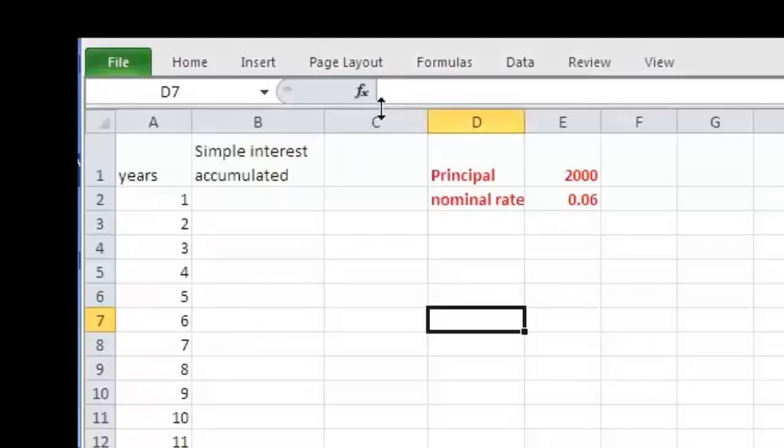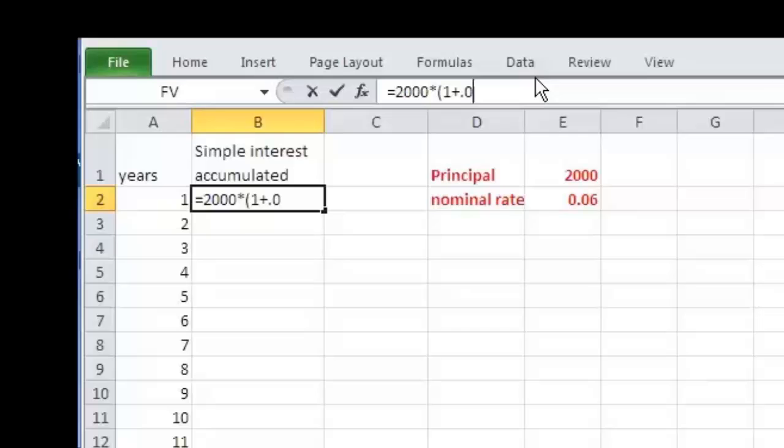In Excel, we are going to place a formula in that cell. We tell Excel the formula we're interested in by putting an equal sign in the formula bar. Then we specify the numbers we want Excel to compute. In this case, we're going to compute an initial investment of $2,000 at 6%. You'll recall the simple interest formula was the principal, so we enter $2,000 times, and then $1 plus the interest rate of .06.